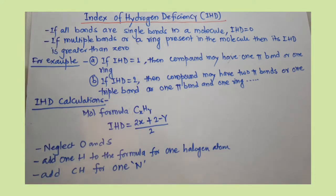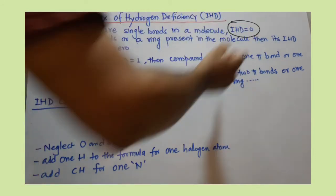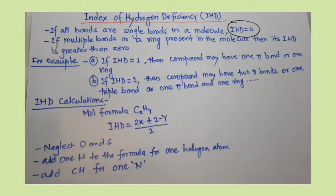If all bonds are single bonds in a molecule, that means IHD is zero. If IHD after calculation is zero, that means there is no double bond or ring present in the molecule. For each double bond or ring, IHD will be one.